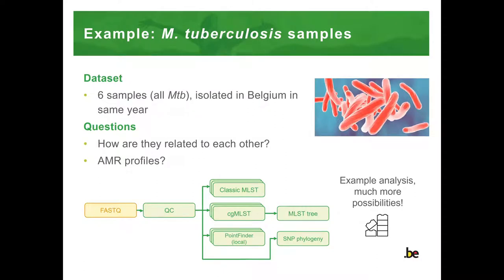As an example, I present the analysis of six Mycobacterium tuberculosis isolates collected in 2019 in Belgium. Through Galaxy, I investigate how these samples are related to each other and also check their AMR profiles using the workflow schematically represented below.